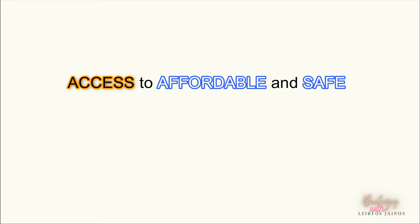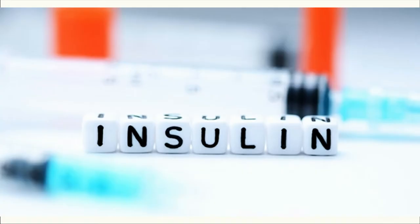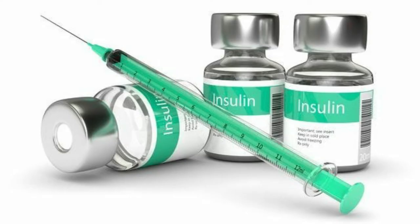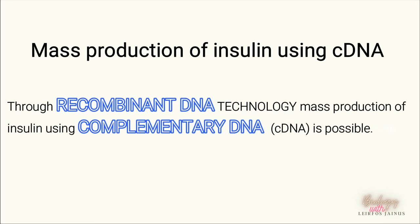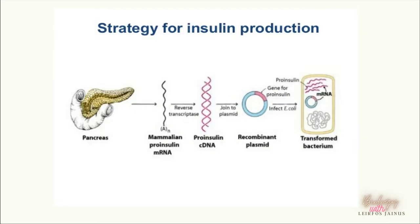To increase access to affordable and safe insulin, we need to produce insulin through recombinant DNA technology. The mass production of insulin is possible through recombinant DNA technology, in which we will use cDNA to synthesize the target gene.